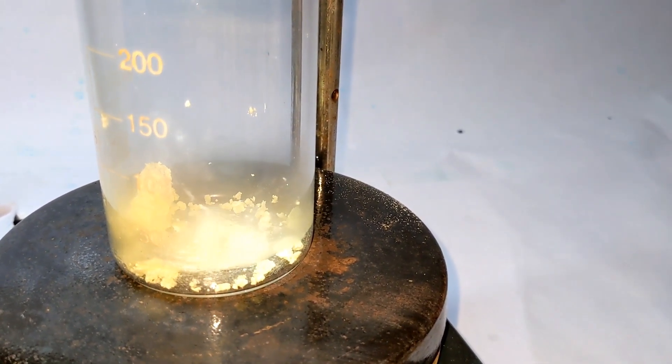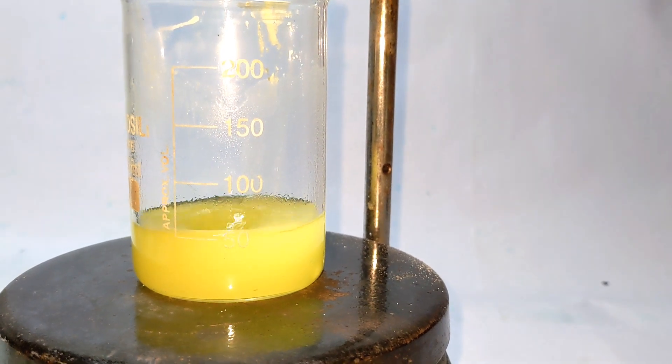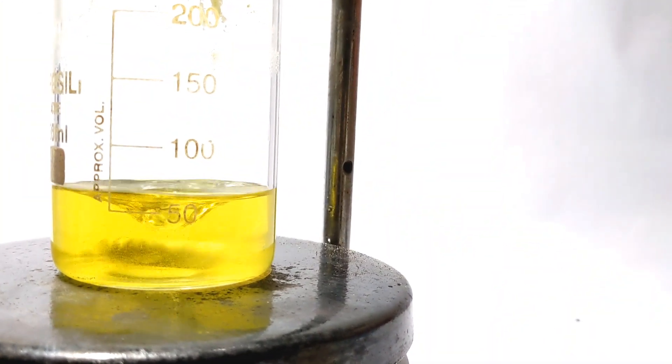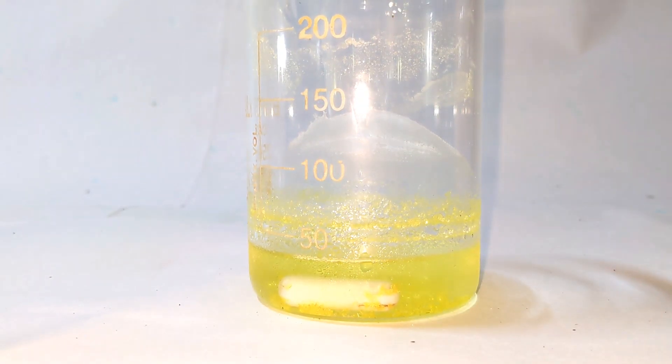The recrystallization was then carried out from acetone. And the crystals formed are bright yellow in color with a needle-shaped geometry.